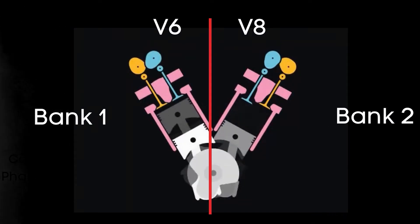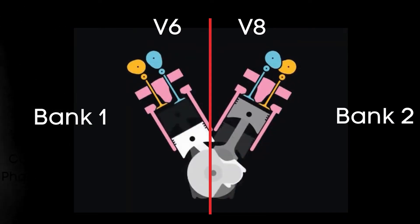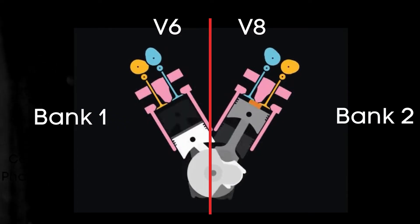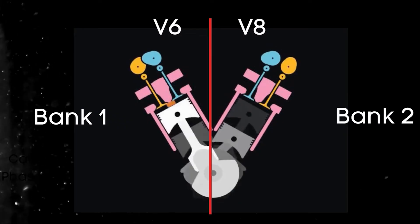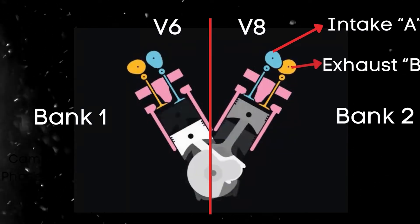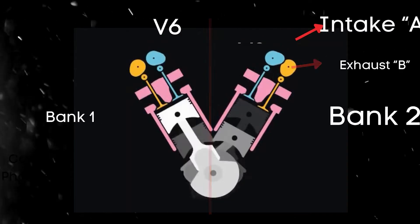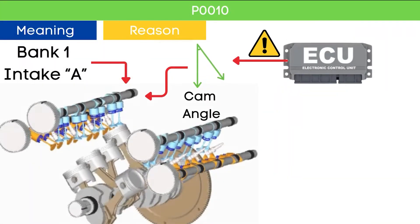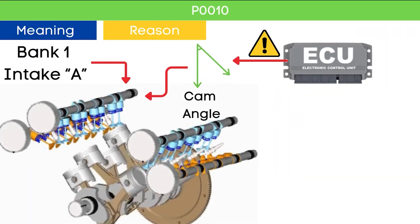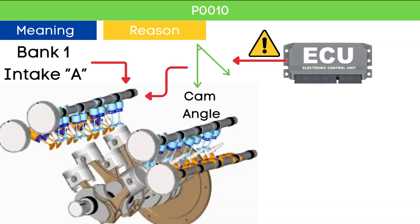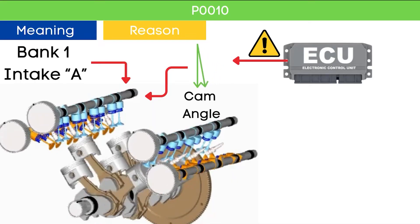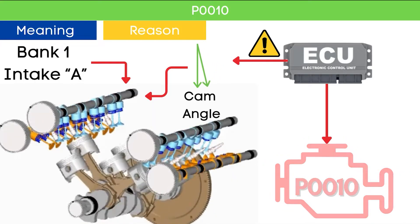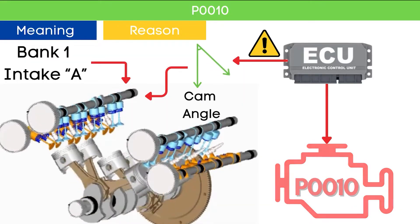For dual overhead camshaft DOHC engines, there are two camshafts per bank — intake and exhaust. When the ECU detects that the bank 1 intake camshaft position is not reaching the targeted cam angle, it triggers OBD2 code P0010.